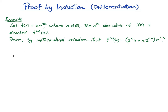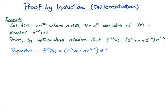So let's go through our routine. Our proposition is that the nth derivative is equal to 2^n · x plus n times 2^(n−1), all times e^(2x). We're going to show this.